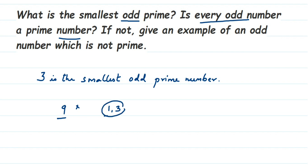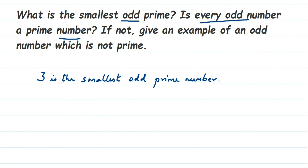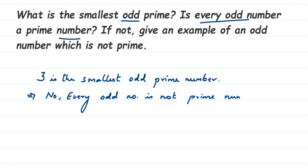If you look at the number nine, it is an odd number, but it appears in the one, three, and nine times tables, so it has three factors — more than two. Therefore, nine is an odd number but not a prime number; it is a composite number. So we can say that no, not every odd number is a prime number.